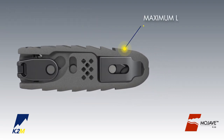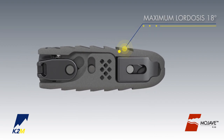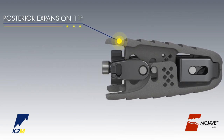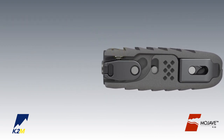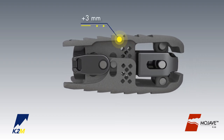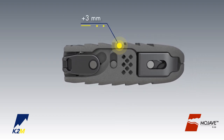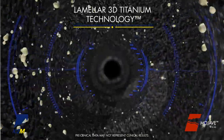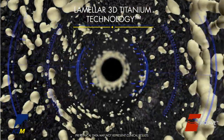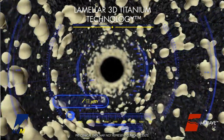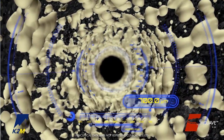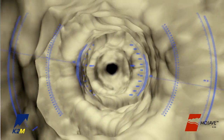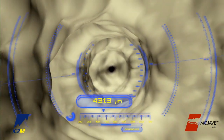Featuring infinite adjustment within the expansion range, the implant may be locked at any desired height and lordosis to aid in the restoration of sagittal balance. Designed with K2M's Lamellar 3D Titanium Technology, Mojave incorporates porous structures along with rough surfaces to allow for bony in-growth and on-growth throughout the end plates.